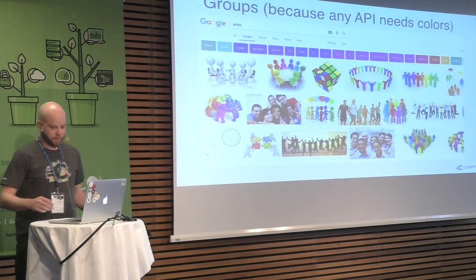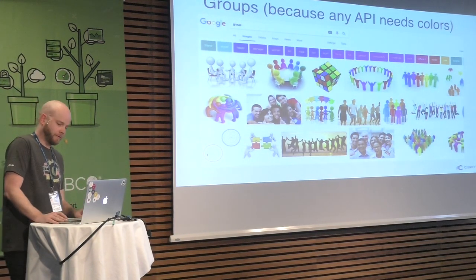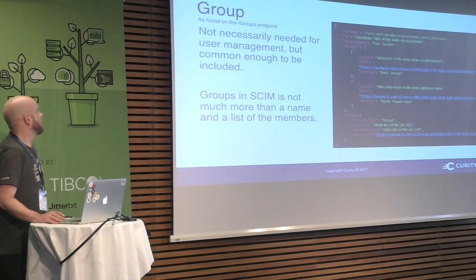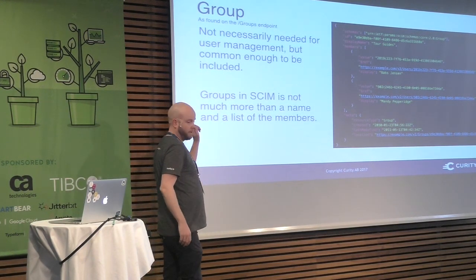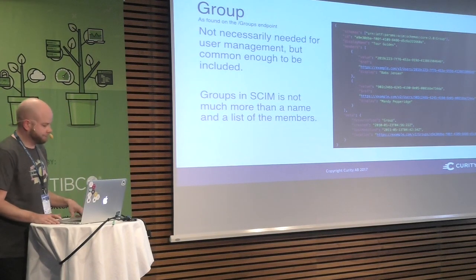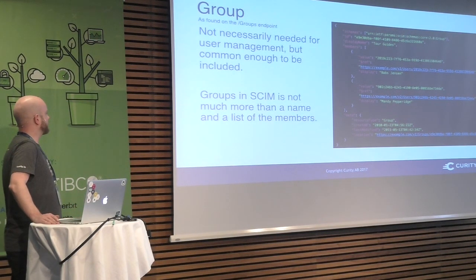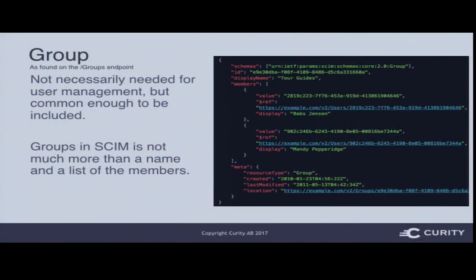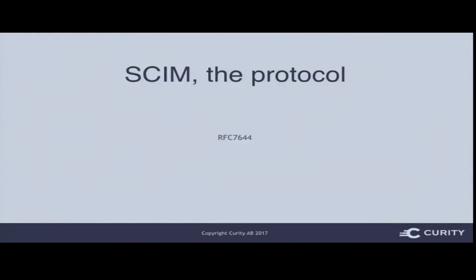Then there are groups. Groups are found at the /groups endpoint, which makes sense. They're not strictly required for user management but they're common enough to be included. A group in SCIM is essentially just a name and a list of members. The relationship goes both ways: the group lists all its members, and a user can list all the groups they belong to.